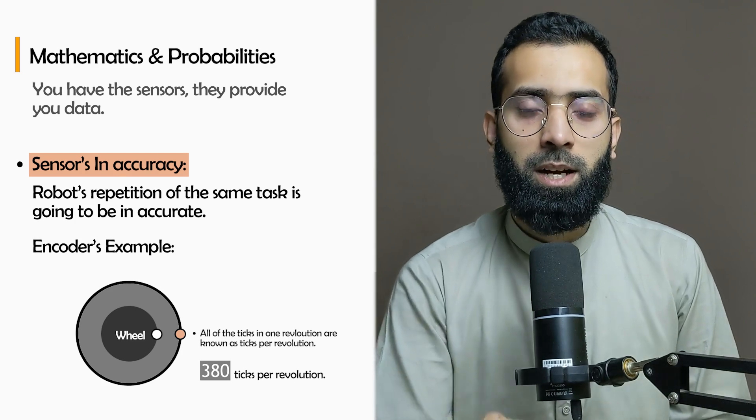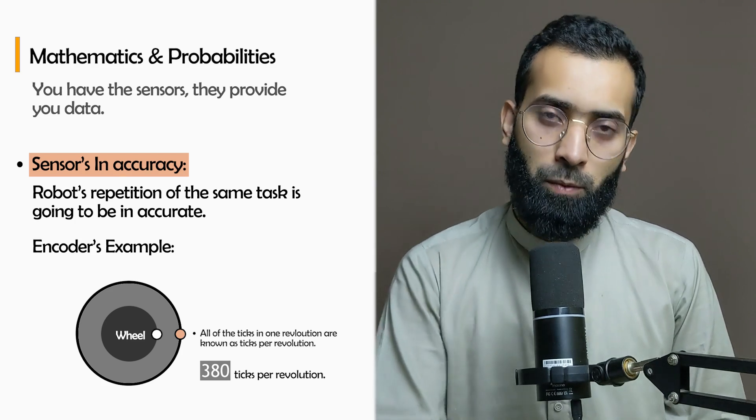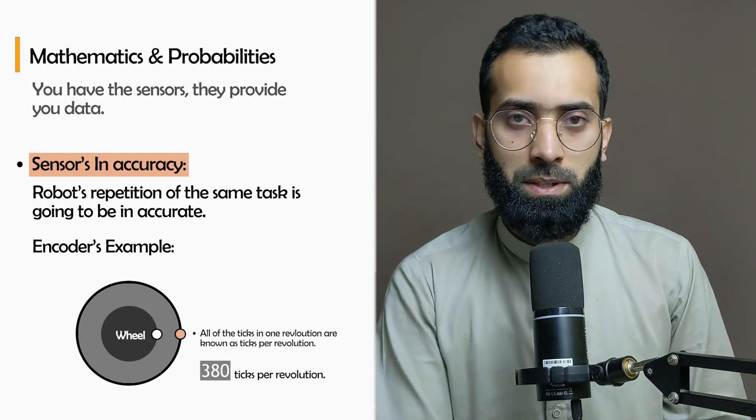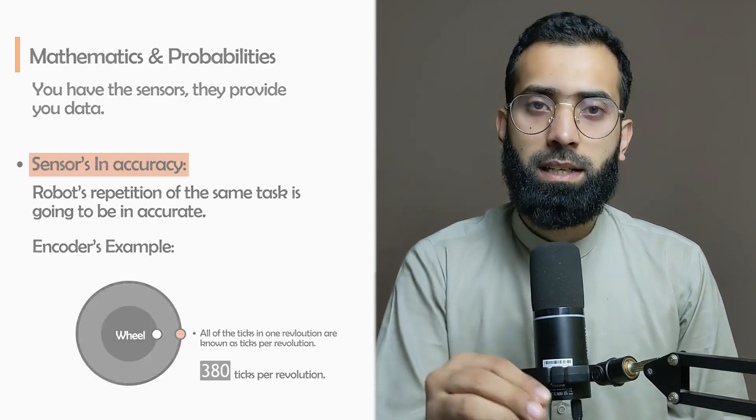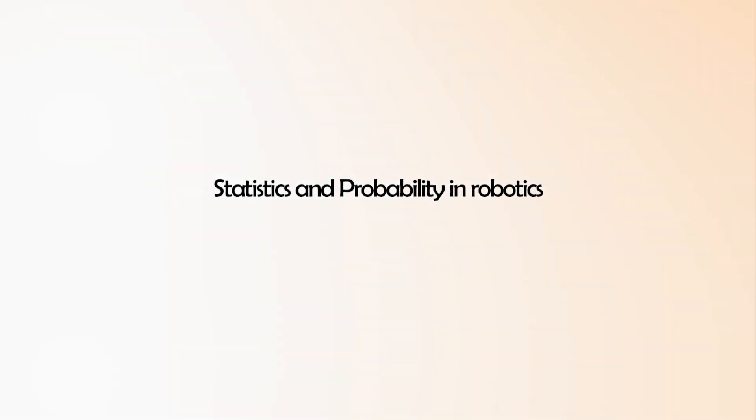This is the point where you bring in statistics and probability in robotics and improve the outcome based on your requirement and the application. Make sure that you are now improving the results from the sensors, and then obviously the decisions for the velocities are going to get improved.